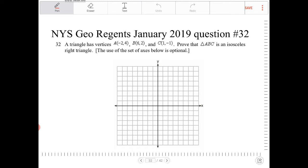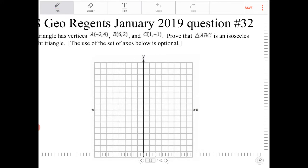So let's draw this out. Even though it says the use of the axes is optional, I always encourage you to use these resources. So A is negative 2, 4. This is A. B is 6, 2, so 2, 4, 6, 2. This is B.